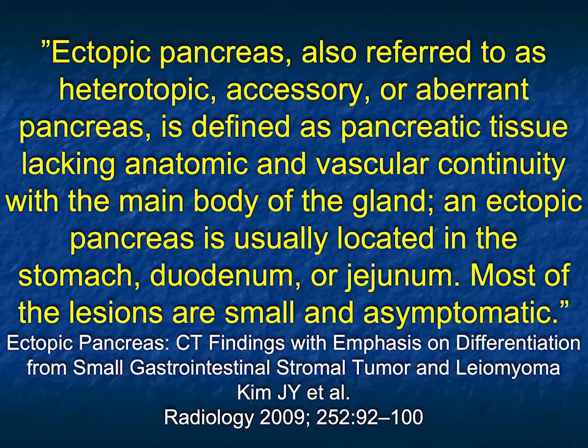An ectopic pancreas can simulate a tumor — it's a rare entity but a good thing to think about as an incidental finding. A biopsy will prove it. It's also called a heterotopic, accessory, or aberrant pancreas and can occur in the stomach, duodenum, or jejunum. Most of these lesions are small and asymptomatic, and in the stomach it's most commonly found in the antrum. What a great case.